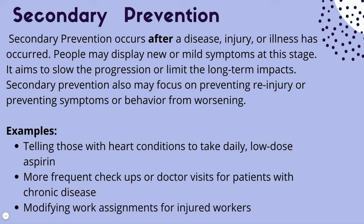Secondary prevention is when a person already has new or mild symptoms. Remember, as the triangle goes up, fewer people will need secondary prevention because we already caught a great amount in the primary phase. Secondary prevention addresses symptoms or behaviors that have already occurred and tries to stop the spread from worsening. The biggest goal is slowing and limiting the long-term impacts.